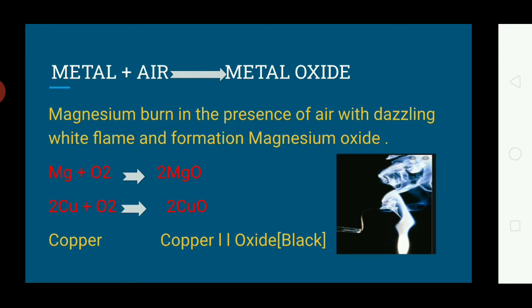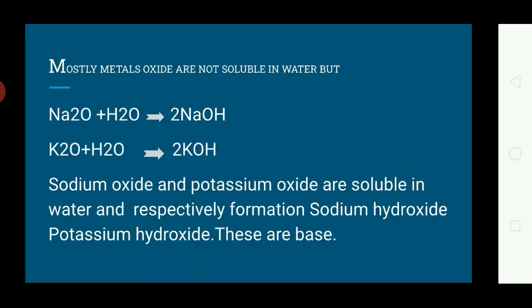Magnesium burns in the presence of air and forms magnesium oxide, producing a dazzling white flame. Magnesium oxide is white in color. Most metal oxides are good conductors of electricity.